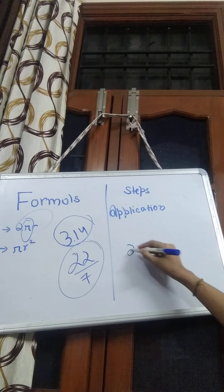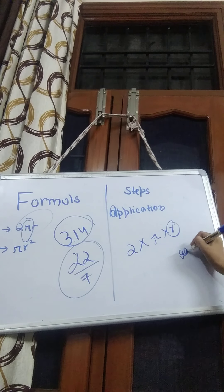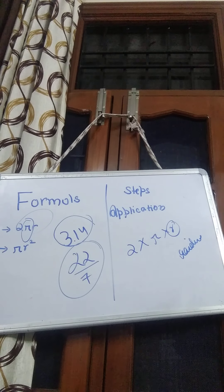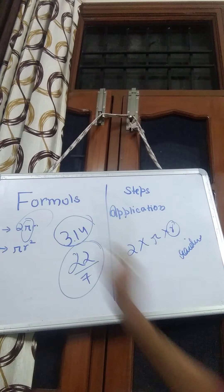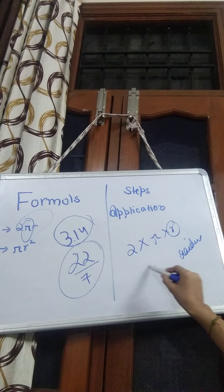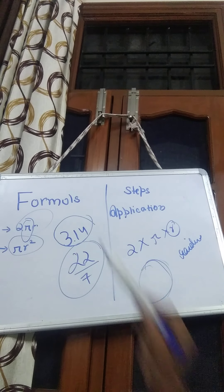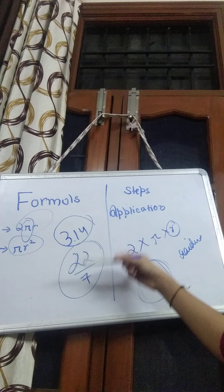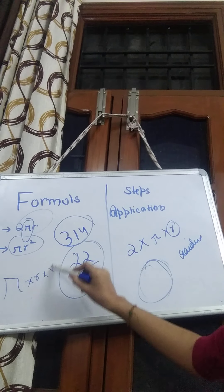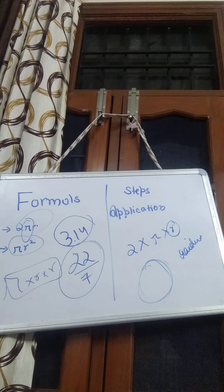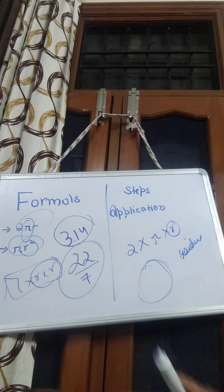To find the circumference, we multiply 2 × π × r, where r is the radius. This gives the circumference of the circle. Next, for area, the formula is πr². Again, pi's value is either 3.14 or 22/7, and we multiply pi by radius squared — that is, r multiplied two times.